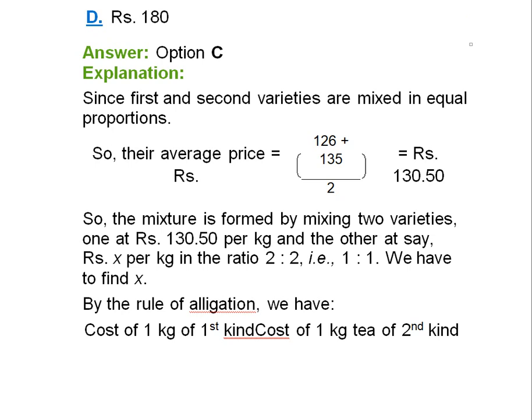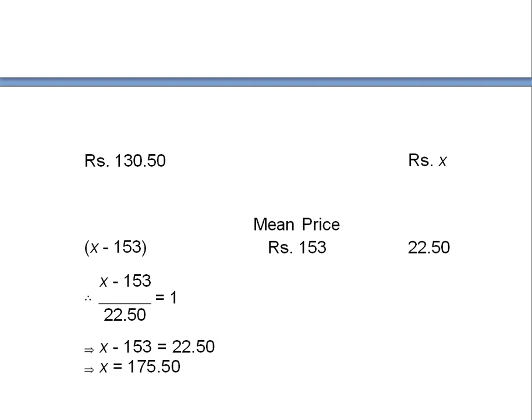What we'll do is we will apply the rule of allegation. Here we have cost of one kg of first kind, cost of one kg tea of second kind.